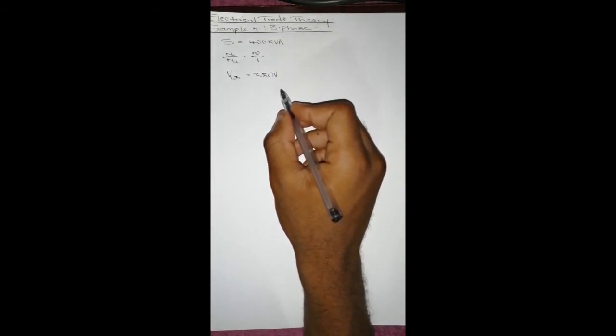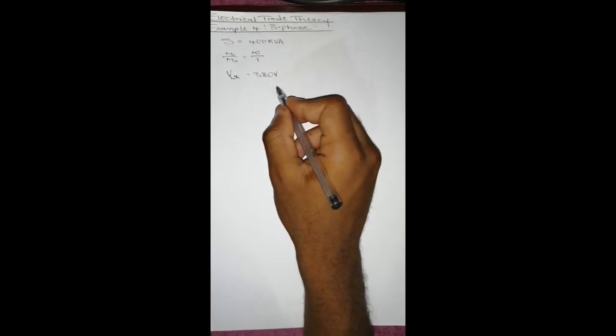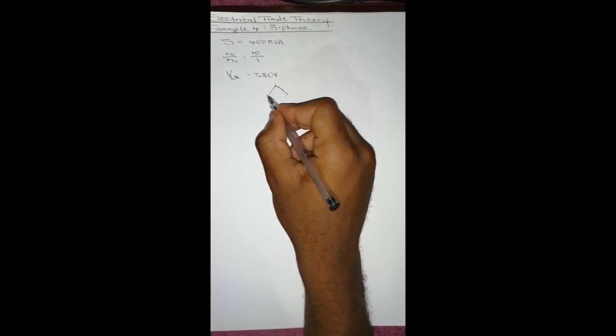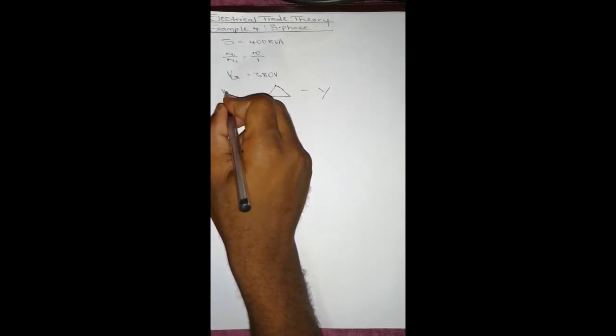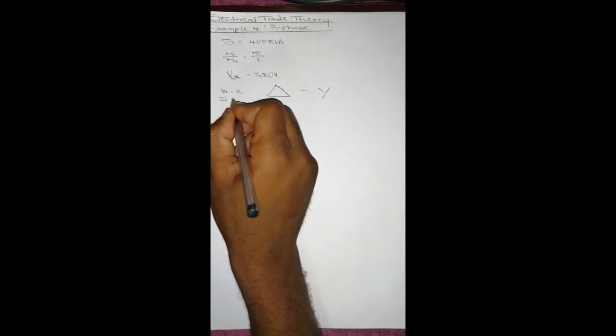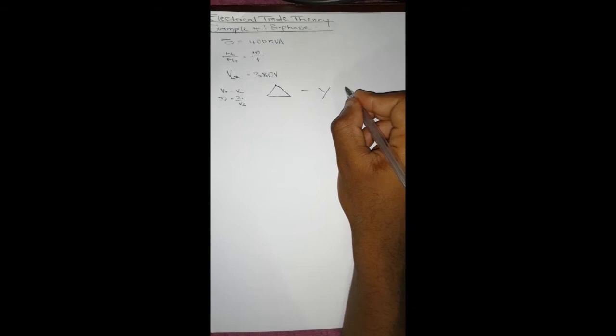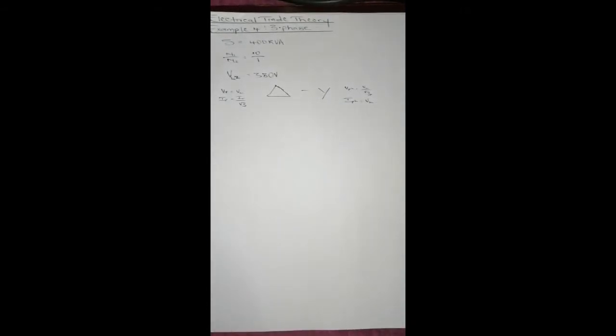We have to draw the configuration and take that into consideration when making calculations. So we are told it's delta star. The formulas for delta are as follows: V phase equals V line, I phase equals V line over square root of 3. And then for star: V phase equals V line over square root of 3, and I phase equals I line. So those are the formulas and we have to keep them in mind and use them when necessary.